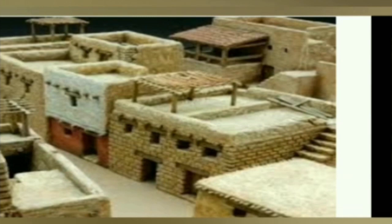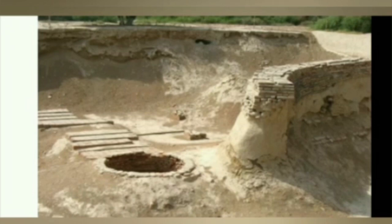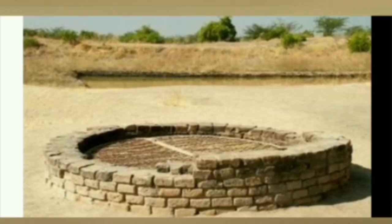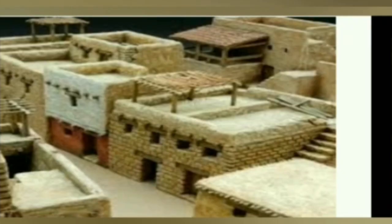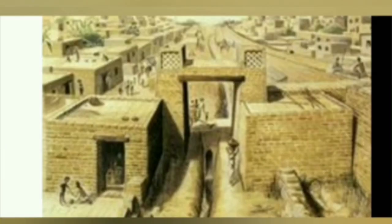The common people probably lived in the lower town, which consisted of smaller houses. Each house had a single entrance, and one of every three houses had a well. Many houses had separate rooms, a bathroom, a kitchen, and a well.